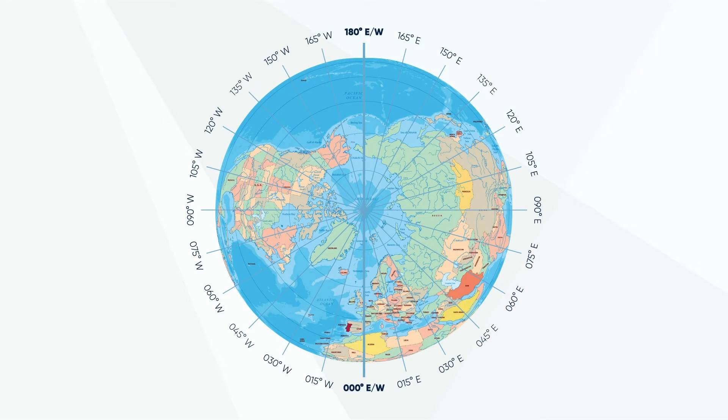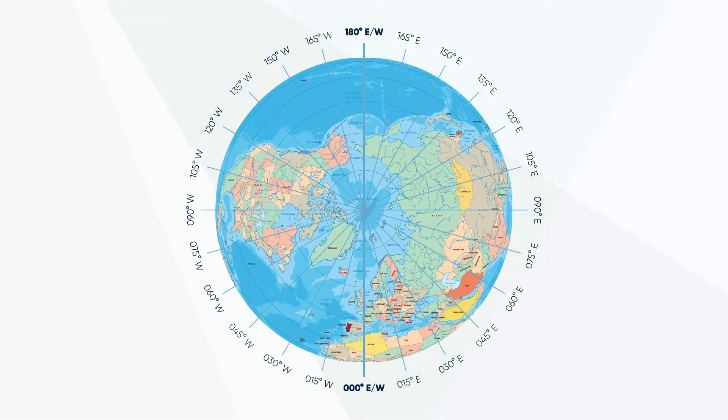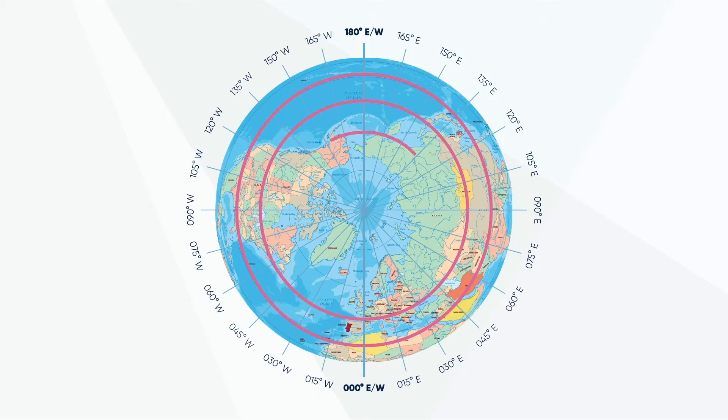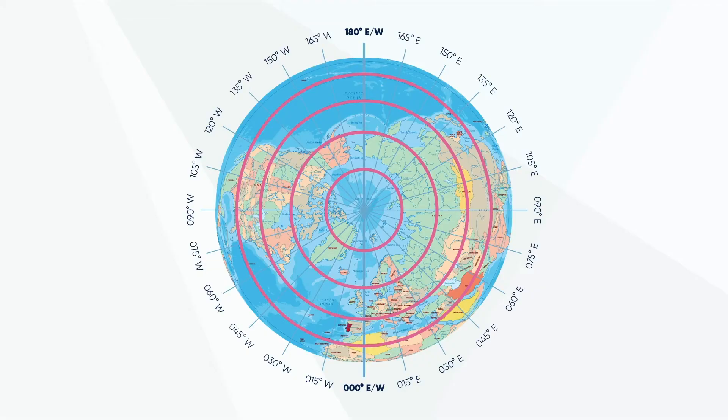All lines of longitude are the same length — they all start at one pole and end at the other. The circle that they make with their anti-meridian always cuts the Earth in half. Any circle that touches the surface of the Earth whose centre is the centre of the Earth is called a great circle. But unlike lines of longitude, lines of latitude are not all the same length. The only line of latitude that perfectly cuts the Earth in half is the equator. All other lines of latitude are actually smaller, as you can see by the decreasing size of concentric circles getting smaller towards the North Pole.